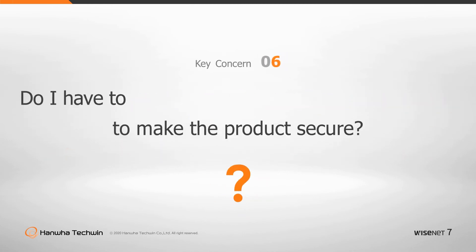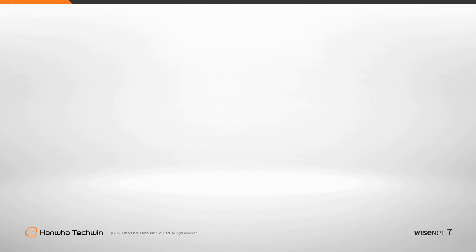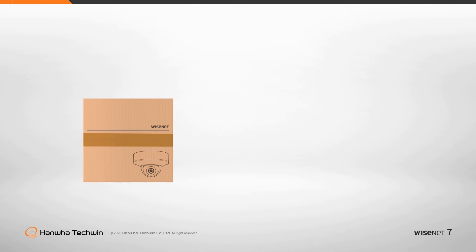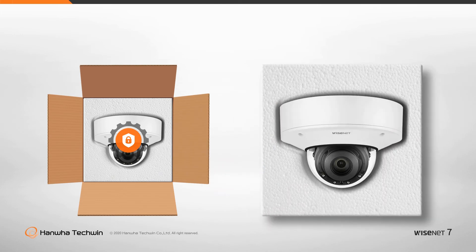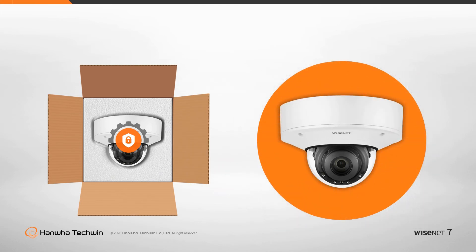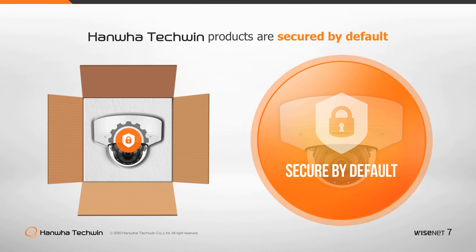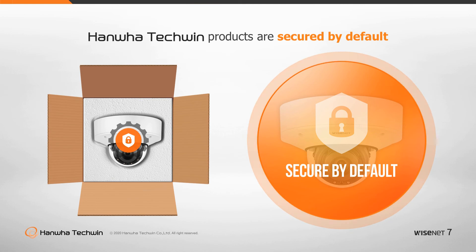Do I have to configure the product on my own to make the product secure? Cybersecurity as a term is frightening to most individuals for being highly technical and requiring in-depth knowledge. If additional efforts are required to secure a device, it will not be done or not be done well. Hanwha Techwin's Wisenet 7 products are designed to work straight out of the box without any user intervention and still be usable without creating obstacles to function. Hanwha Techwin also provides documentation in the form of the Network Hardening Guide for those who wish to take security configuration even further.